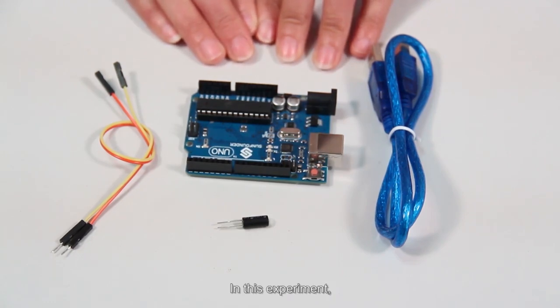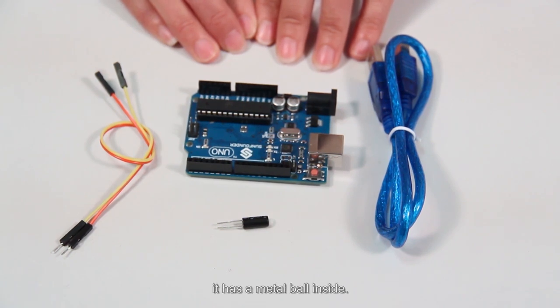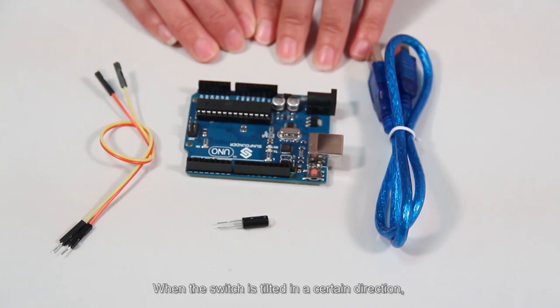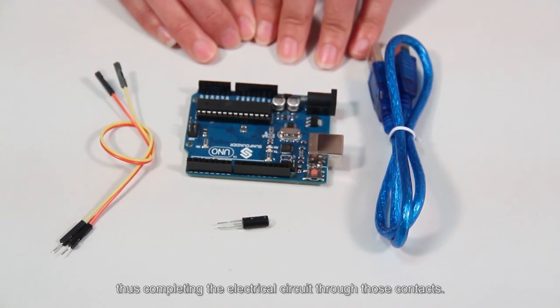In this experiment, we use a rolling ball tilt switch. As the name suggests, it has a metal ball inside. When the switch is tilted in a certain direction, the ball rolls down under the force of gravity and touches a set of contacts, thus completing the electrical circuit through those contacts.